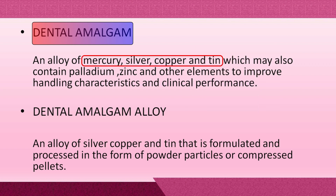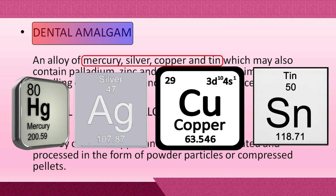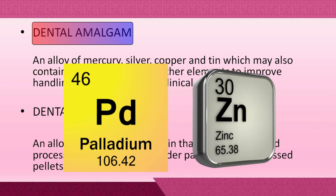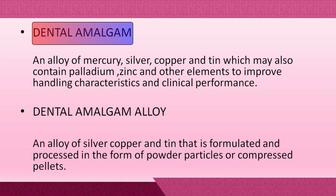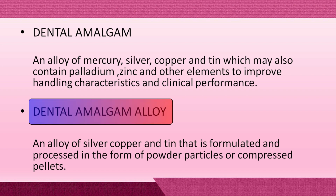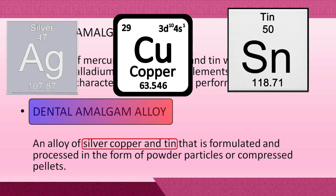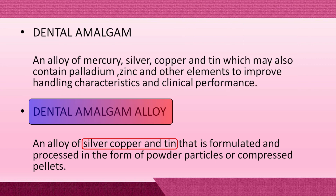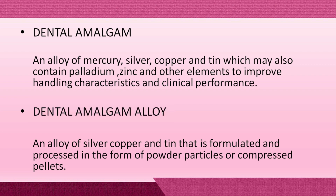Dental amalgam is an alloy of mercury, silver, copper, and tin, which may also contain palladium, zinc, and other elements to improve handling characteristics and clinical performance. Dental amalgam alloy is an alloy of silver, copper, and tin that is formulated and processed in the form of powder particles or compressed pellets.